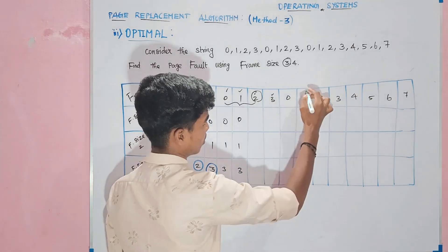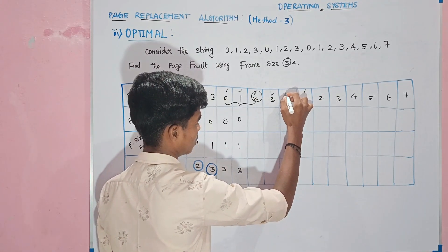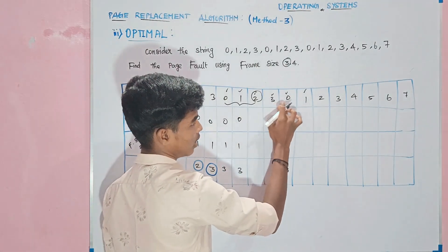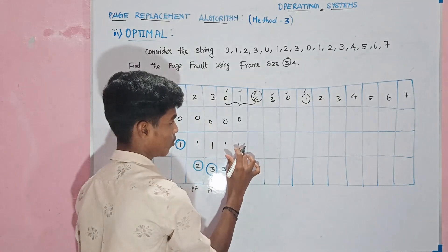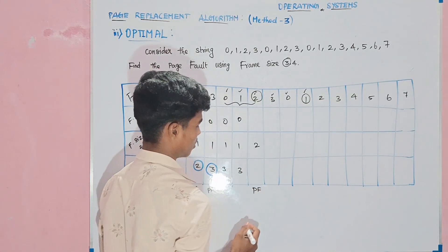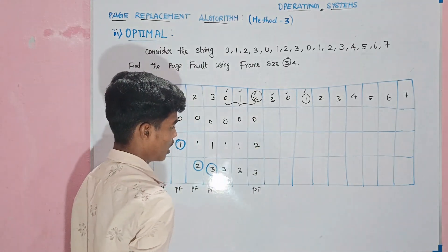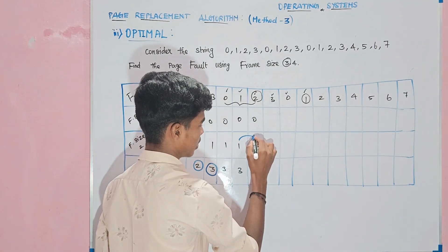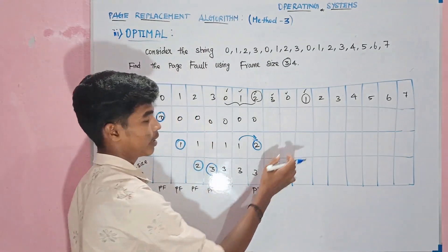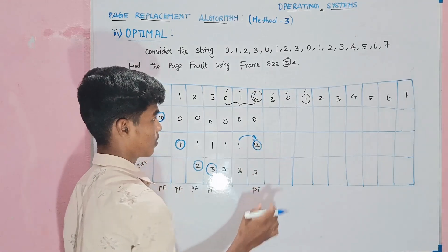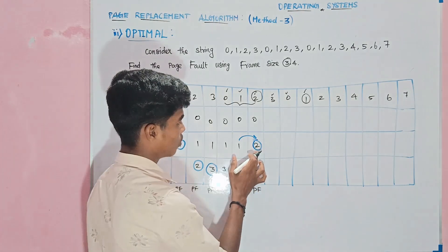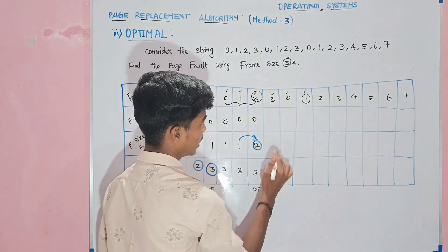So if you want to insert 1, you can insert 1, then 0. Values 0, 1, 3. So if you want to insert 1, then we will set 2. The page fault will be created. So here we are going to insert 2 — we will replace it in the future. That is the optimal page replacement.